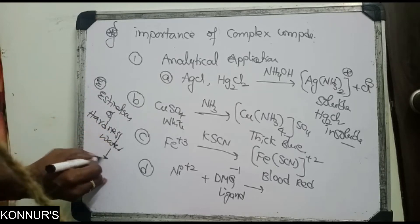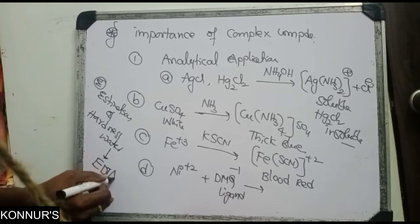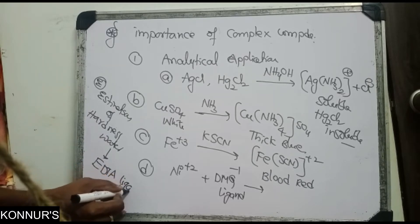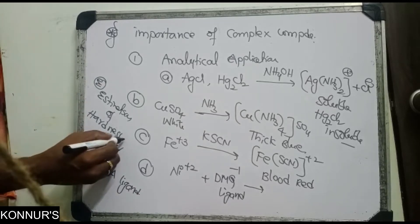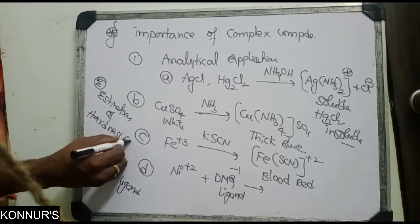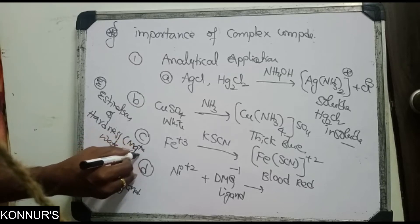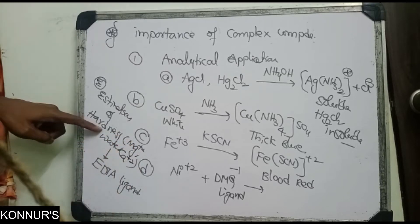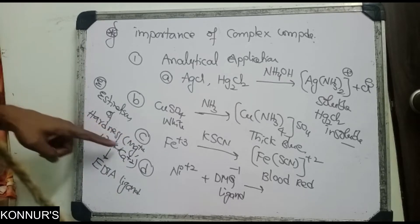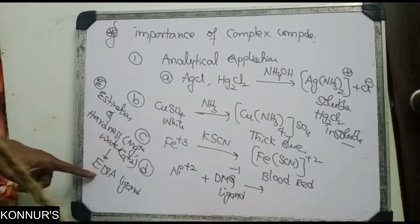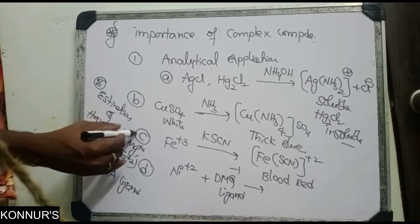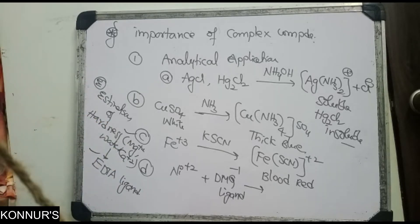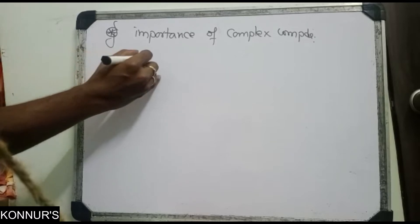EDTA is the famous ligand used to identify hardness of water. Hardness is due to Mg2+ and Ca2+ ions present in water. These ions form complexes with EDTA and are separated, converting hard water to soft water. The amount can be determined by volumetric analysis.